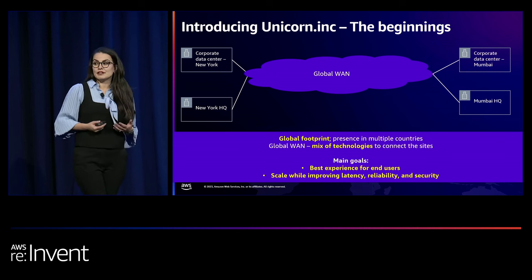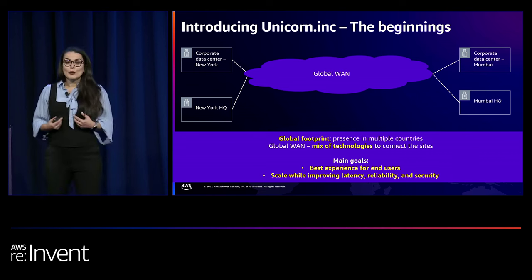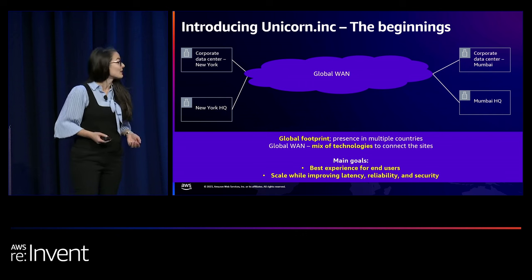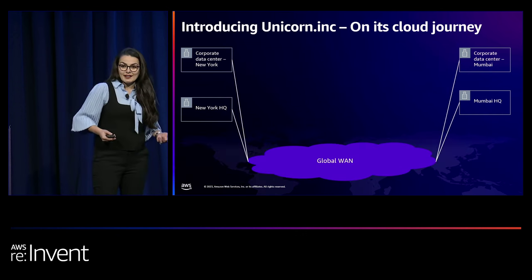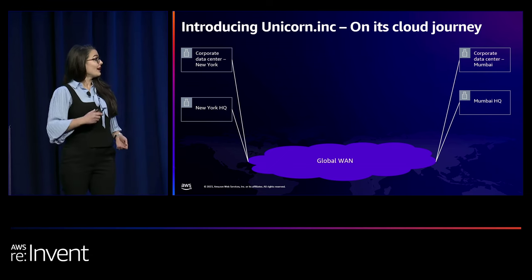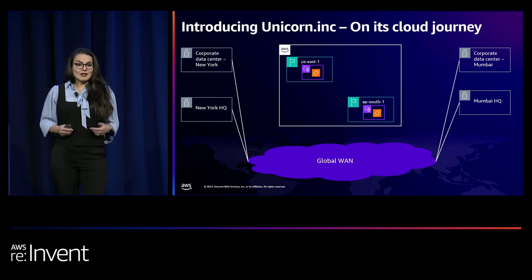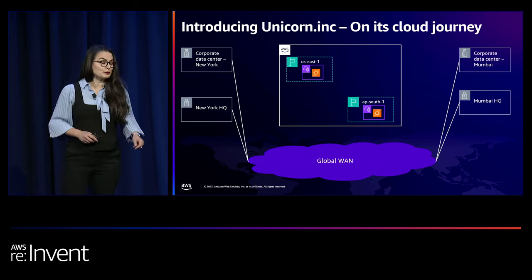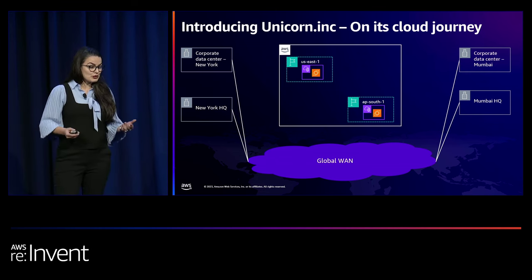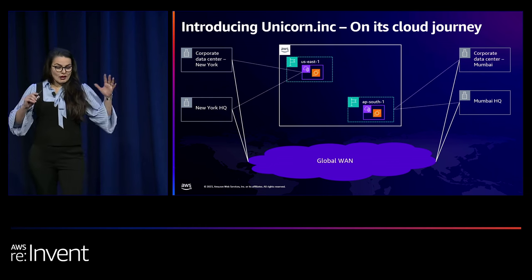What they care about is the experience of their end users. They need to provide their end customers the best possible experience. So how can they scale while improving latency, while improving the performance of their application? Well, by moving to the AWS cloud. Because of proximity, they chose to use the Virginia region, which is closest to the New York headquarter, and then the Mumbai region, which is closest to the Mumbai headquarter. Once they are in the cloud, they now have a mixed, hybrid environment. The next question is: how can Unicorn.think actually improve the experience of their end user?